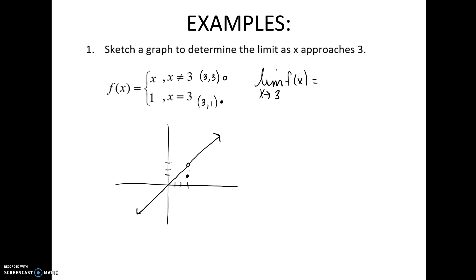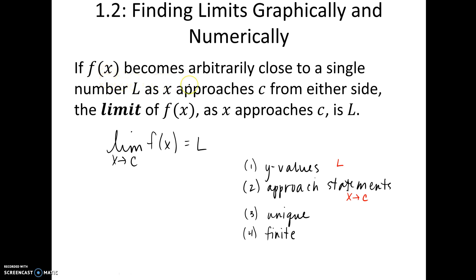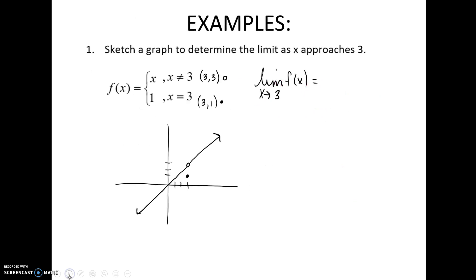So now as x is approaching three, and remember what the definition states. As the function becomes arbitrarily close to a single number, as x approaches that number from either side. So if I think about, here's x is equal to three. As my function approaches three, and gets closer and closer and closer to that, what are my y values approaching? My y values are approaching three. So the limit of the function is three. The value of the function, however, if I were to ask you what's f of three, that's equal to one. And that's the importance of the approach statement. It's a y value. My y values are approaching three, but it doesn't have to necessarily equal what the value of the function is.